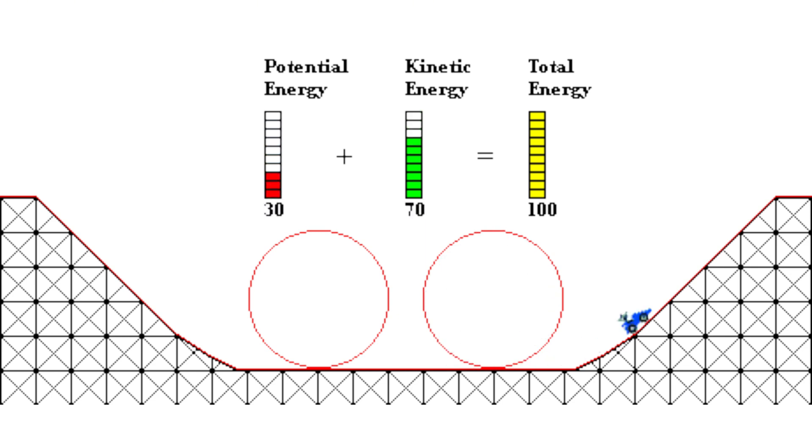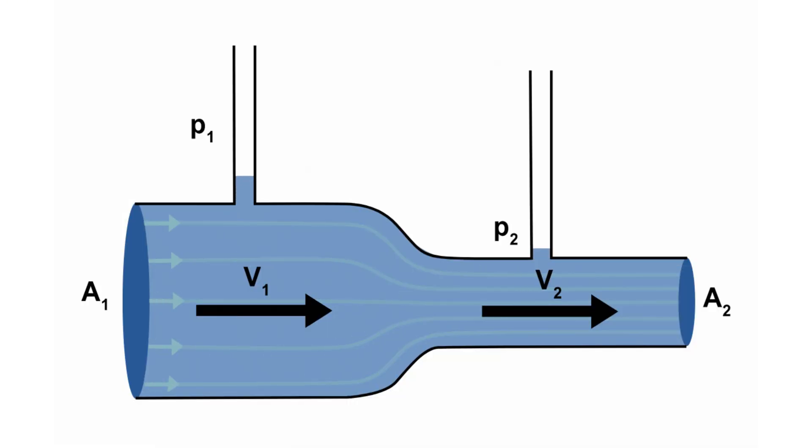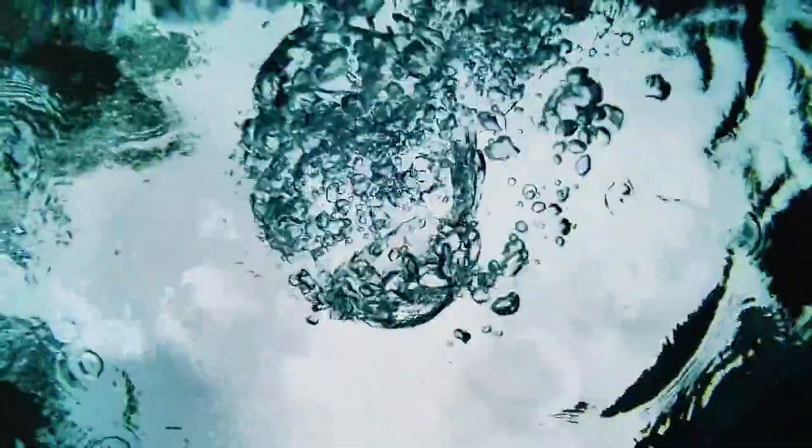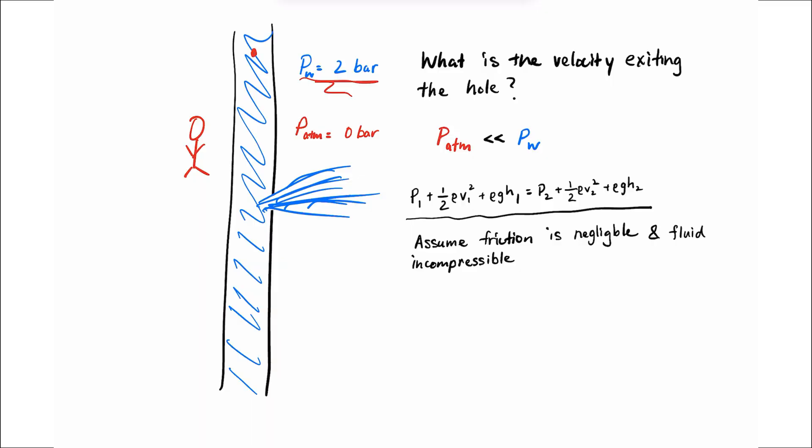So the total energy along a streamline is constant in the absence of friction. The fluid must also be incompressible, which water can be assumed to be. So if we set this location as point one and this location as point two, then we can assume that the velocity of water in the pipe v1 is much smaller than the velocity at the hole v2, so this term becomes negligible.